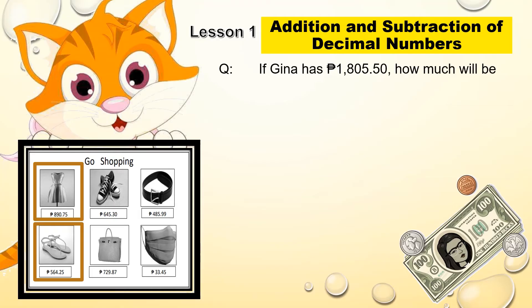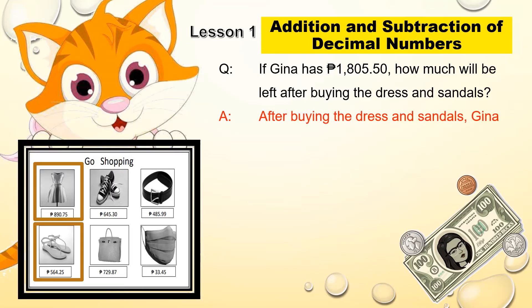Now let's try this question: if Gina has 1,805 pesos and 50 centavos, how much will be left after buying the dress and sandals? After buying the dress and sandals, Gina will have 350 pesos and 50 centavos.